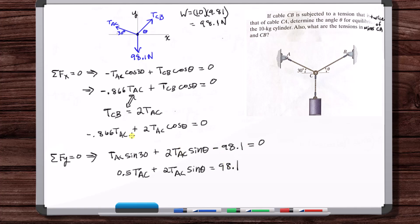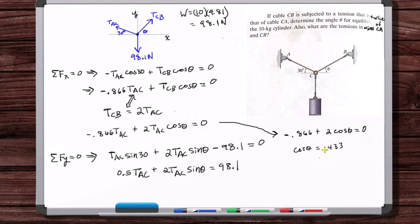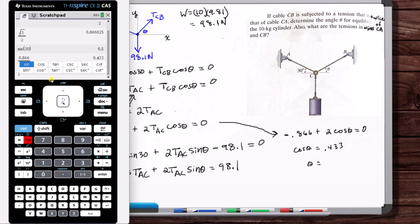So yeah, we've got two equations two unknowns. Okay, so looking at this, these T_ACs cancel, so we can solve for theta here, and then once we have theta then we can solve for T_AC here. So we can divide through by T_AC, divide both sides of this equation by T_AC. So 0.866 divided by 2 cosine theta is equal to, theta is equal to 64.3 degrees.